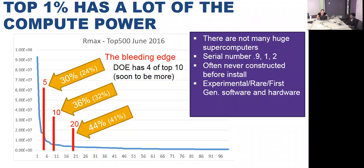Part of what goes on here is we're talking about machines that are deployed where we've often joked they're serial number one or two, but in reality sometimes they're even pre-one. These are machines that when they come to the facilities may have never been built before. This was the case with Mira, our current machine at the ALCF. IBM didn't have the floor space or power to build all of Mira, so when they first brought it here and plugged it all together we were dealing with serial number 0.9, testing everything at scale as it was being installed. These machines have never been installed before and might never be again — we're talking about experimental, rare, first-generation hardware, because the point is really to drive the technology as hard as possible.